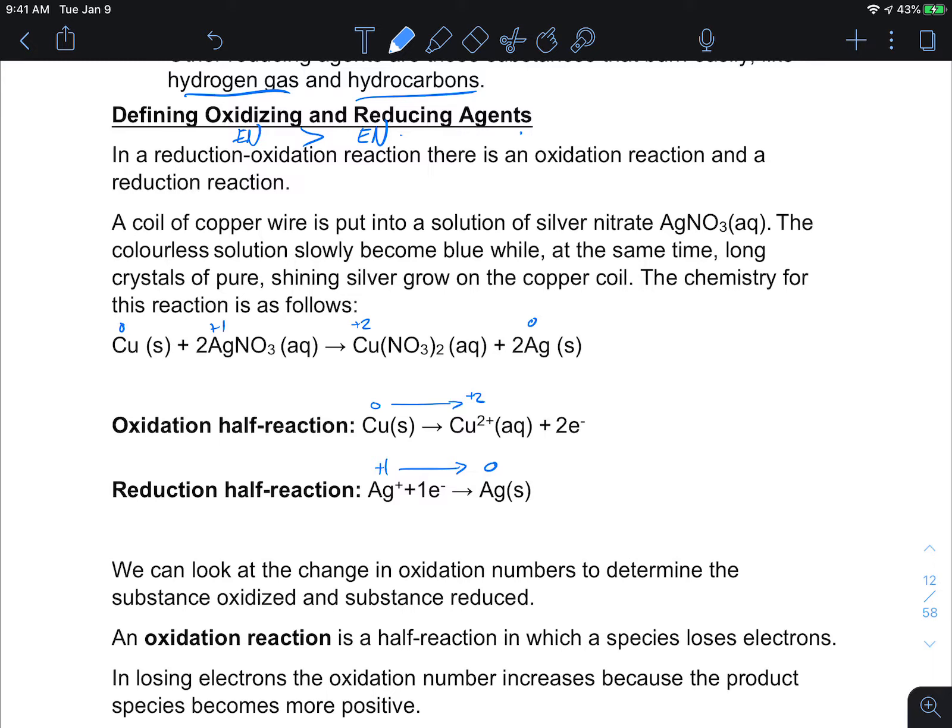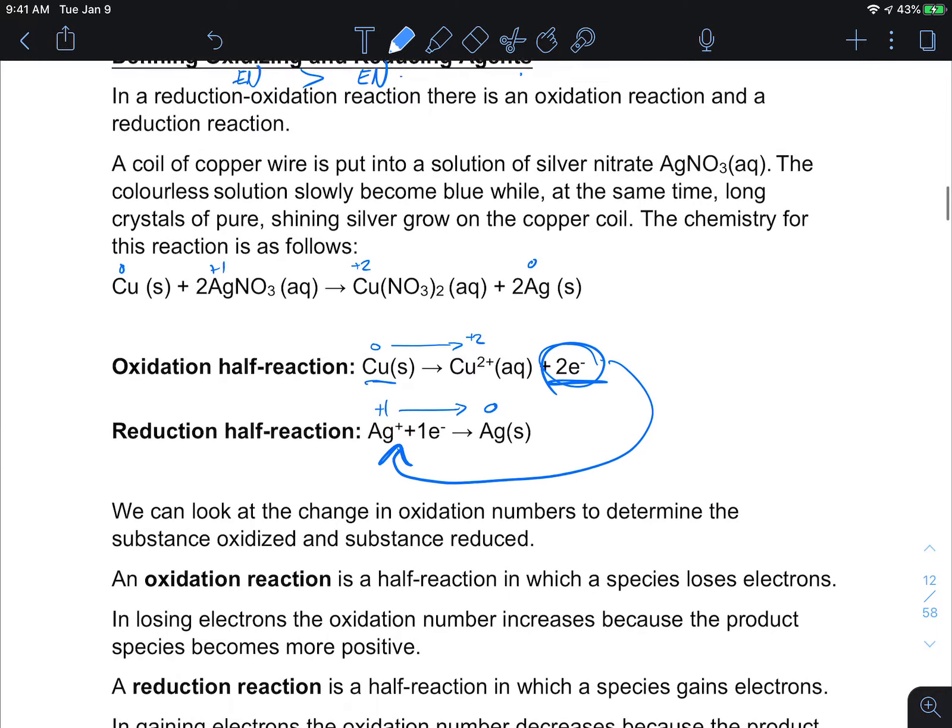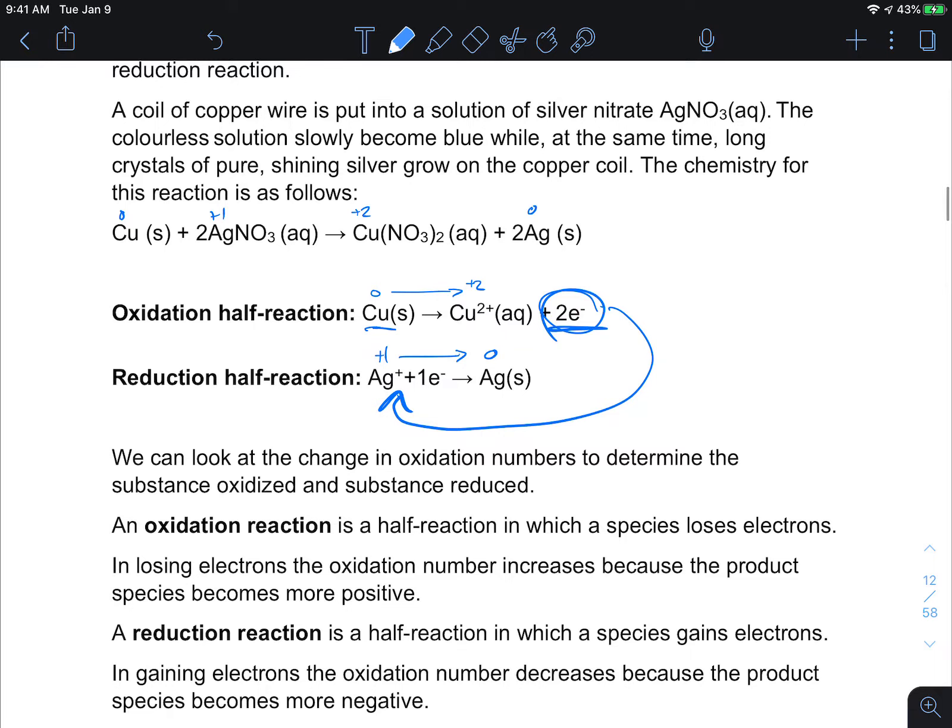But if we think about it more as the action, what is the product here? Well the product of the copper is electrons. So that means those electrons are going to go attack the silver ions. So the source of electrons in this chemical reaction is the copper. So that means that the copper is the species that gives the electrons away. The copper is what causes the reduction of the silver.